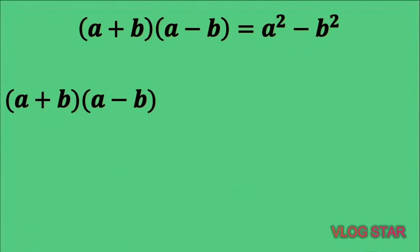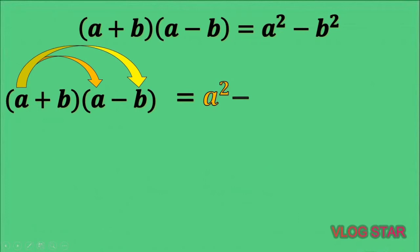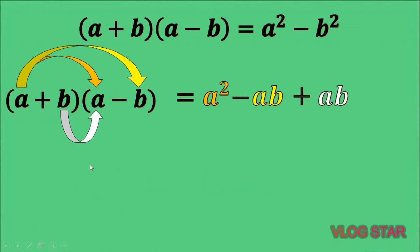To verify this, let us use the distributive property of multiplication, just to confirm we get the same answer. a times a gives a squared. a times negative b — the answer is negative because one is positive while the other is negative — the product is ab. Next, positive b times positive a: both are positive, so we put plus; the product is ab. Lastly, positive b times negative b — they differ in sign, so we put minus; the product is b squared.